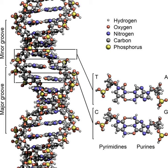The main role of DNA in the cell is the long-term storage of information. It is often compared to a blueprint, since it contains the instructions to construct other components of the cell, such as proteins and RNA molecules. The DNA segments that carry genetic information are called genes, but other DNA sequences have structural purposes, or are involved in regulating the expression of genetic information.